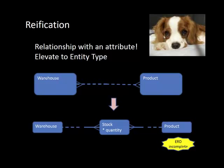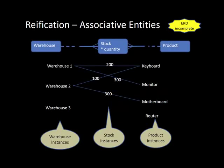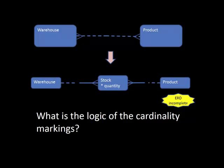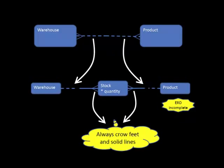This ERD is incomplete because no primary keys are shown at all. The key point is we still have not specified the primary key for stock. We know it has an attribute called quantity, but we need to talk about the primary key. Each line represents an instance of the associative entity stock. The lines from stock are always solid with crowfeet, and whether the lines on the other sides are solid or dashed is determined by the original diagram.